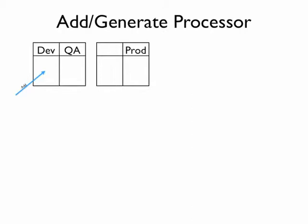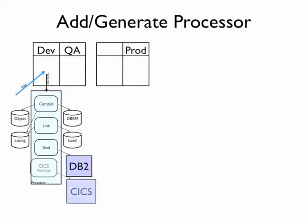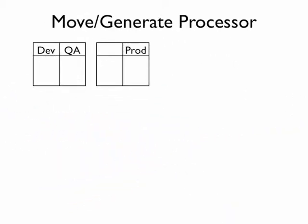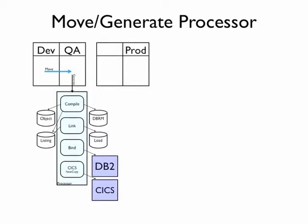When you add elements into Endeavour, they get generated using a generate processor. This will automate processes like compile and linking, and optionally maybe a bind or kicks new copy. When we move to the next stage in the lifecycle, typically we'll use almost exactly the same processor — it could be a generate, again compile, and new copy.